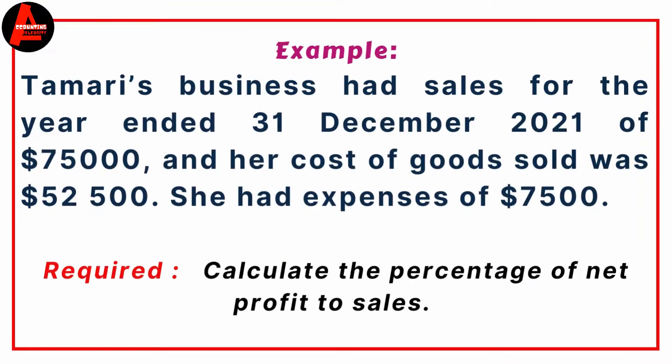Let's get started. Look at the question on the screen. Tamari's business had sales for the year ended 31st December 2021 of $75,000 and her cost of goods sold was $52,500.